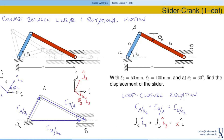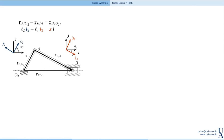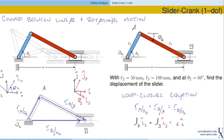With these directions, I can write my loop closure equation as L2 times I2 plus L3 times I3 equals x in the I direction. The input part is shown in blue, and the unknown output variables — theta 3 embedded in I3, and x — are both in red. Feel free to pause this video and go back to make sure you understand how these things are defined and why this looks like this.